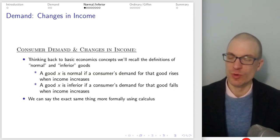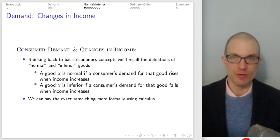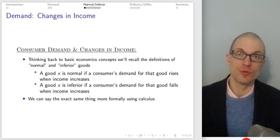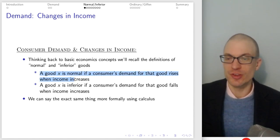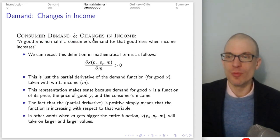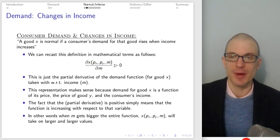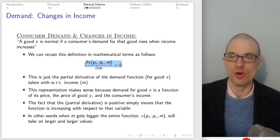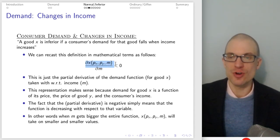Think back to basic econ, like Econ 101 or a principles-level class. We define normal goods as those where if your income rises, you buy more, and if your income falls, you buy less. Inferior goods are those where if your income rises, you buy less, and if your income falls, you buy more. We can do the same thing using calculus. We say a good is normal if the partial derivative of the demand function with respect to income is positive. If we sign it as negative, we know we have an inferior good — when income gets bigger, the demand function takes on smaller values.